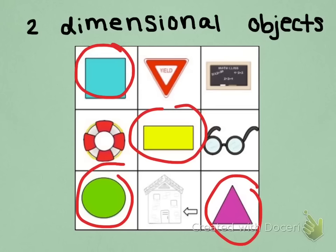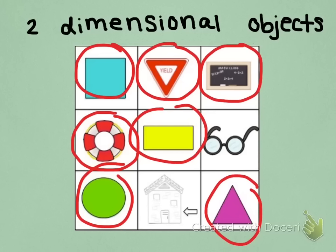The sign, if you would lay it down, is also a flat two-dimensional surface. The whiteboard or chalkboard in our classroom is a nice flat surface. So that is also a two-dimensional object. And then we have the drawings of a life raft, glasses, and a house. Drawings are also two-dimensional because they're done on paper.